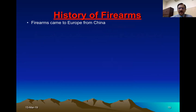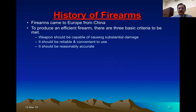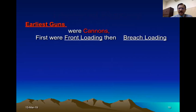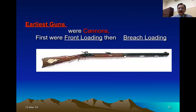In ancient times, firearms were imported to Europe from China, and all efforts were made to make the weapon more efficient, accurate, and capable of producing substantial damage. Various types of weapons were devised. Initially there were cannons — the earliest guns, which were front-loading, meaning the bullet or projectile was introduced from the muzzle end. Then came breach-loading, where the firing mechanism is in the middle part.